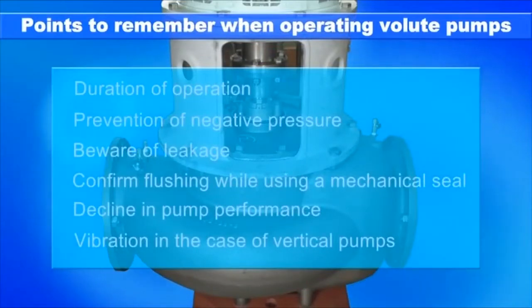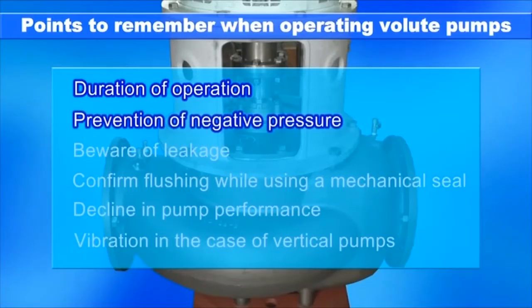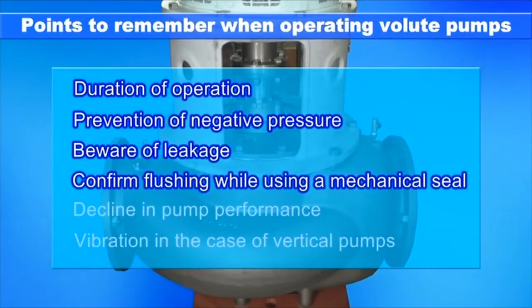The following precautions must be taken in operating volute pumps: consider replacement of ball bearings depending on duration of operation, beware of negative pressure operation to prevent cavitation, during operation beware of leakage from the gland, and when using a mechanical seal, beware of damage to the seal and confirm that the flushing liquid is flowing and the mechanical seal part is clean.